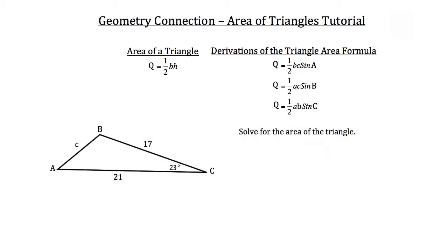What we've been given is that angle C is 23 degrees and side length a has a measure of 17 units.